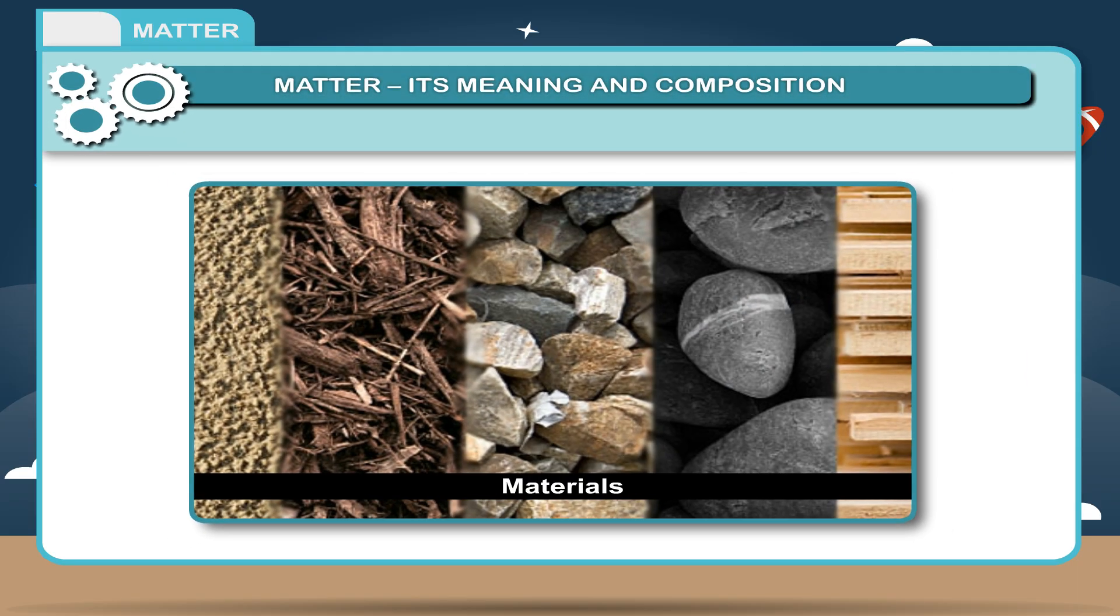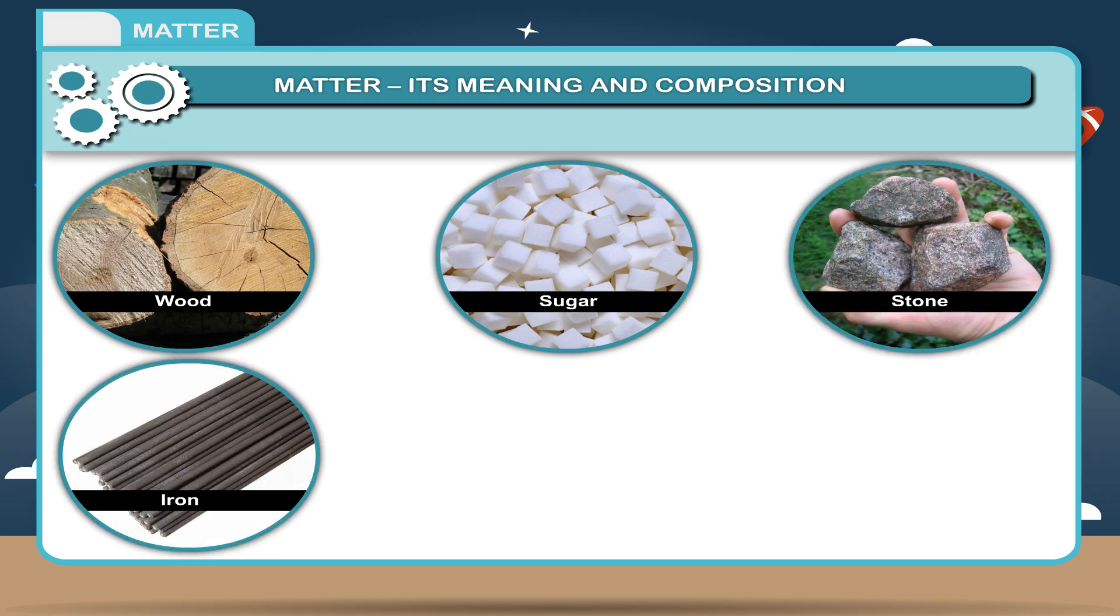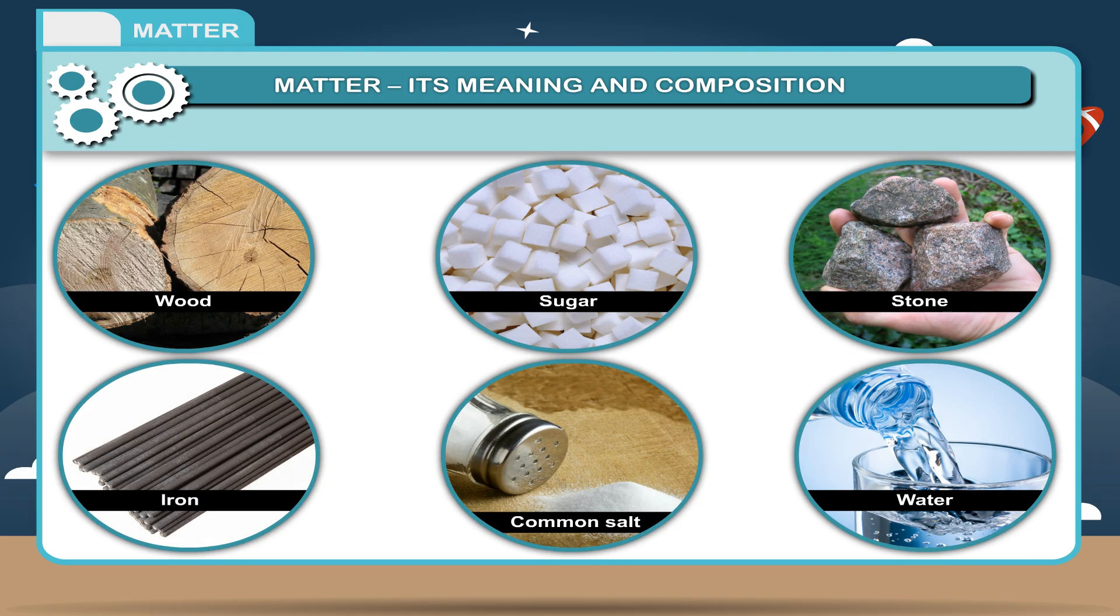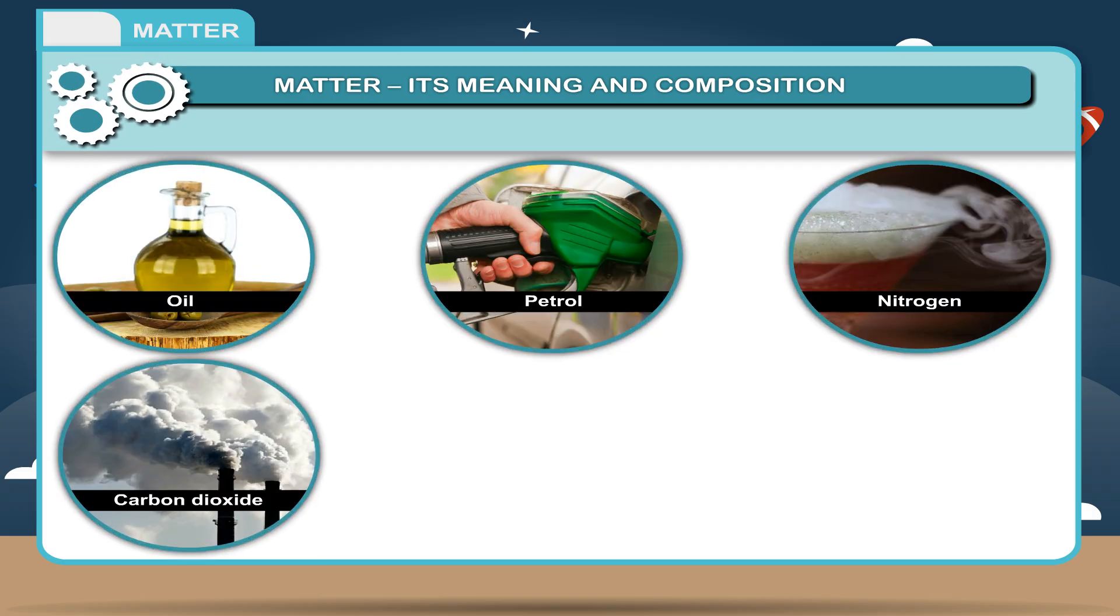There are various materials around us such as wood, sugar, stone, iron, common salt, water, oil, petrol, nitrogen, and carbon dioxide.